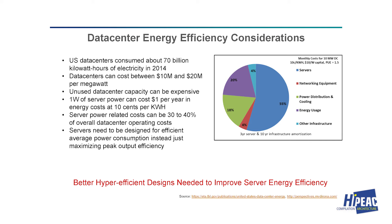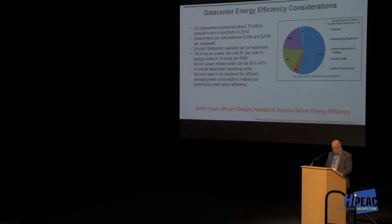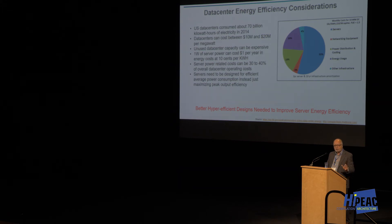The green segment is depreciation on the capital to construct the data center for power and cooling, and the purple is actual energy consumption cost. This is based on a 3-year life; if you go to a 5-year life the acquisition cost stays the same and these pieces get even larger. Unless you design your servers for energy efficiency, you need to look at efficient average power consumption — not just the maximum power — and use all of the power that you paid for.